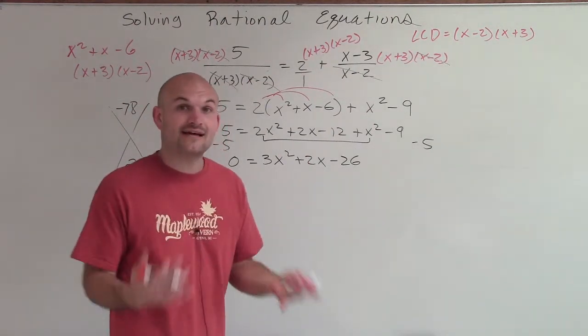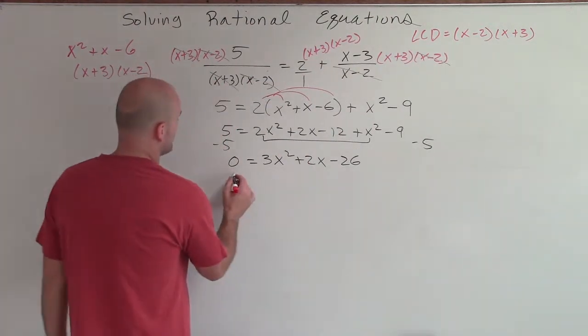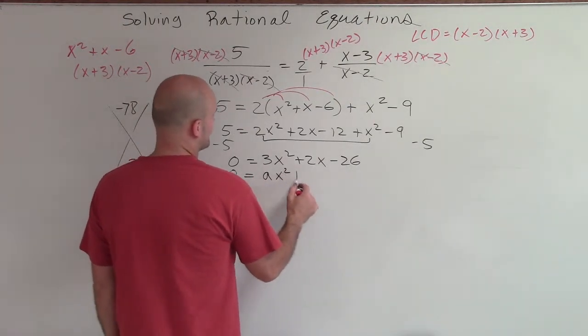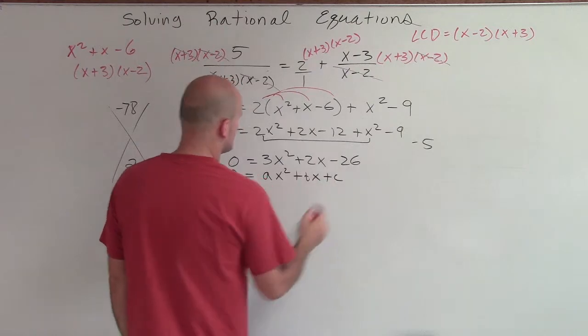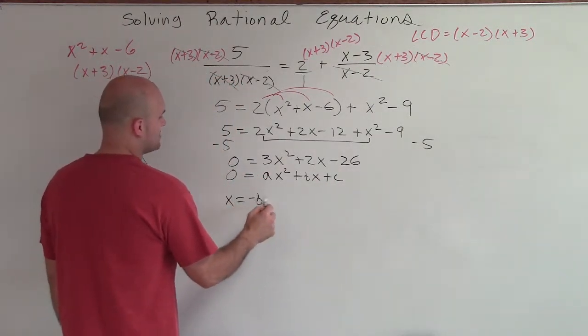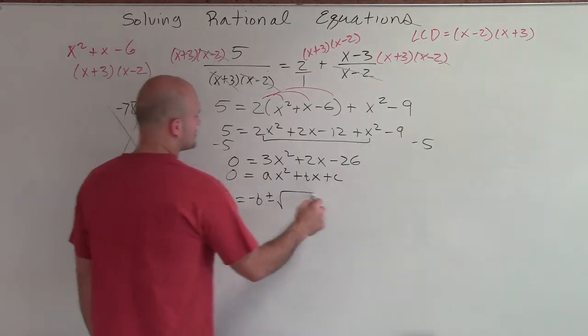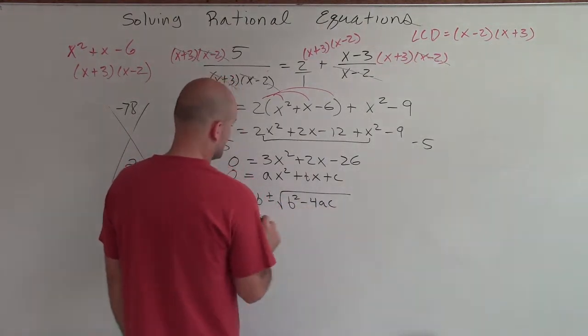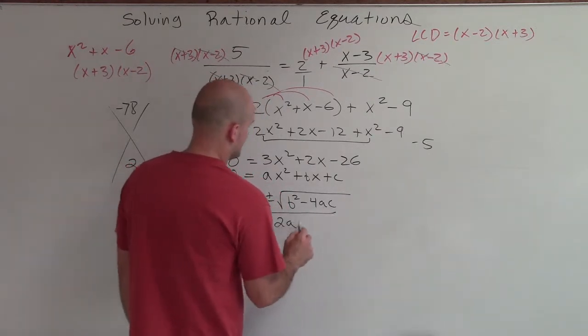So therefore, what I'm going to do is I'm going to have to use the quadratic formula. Now remember, the quadratic formula comes in the state whenever we have a quadratic in ax squared plus bx plus c. And then that form is x equals opposite of b plus or minus the square root of b squared minus 4 times a times c all over 2a.